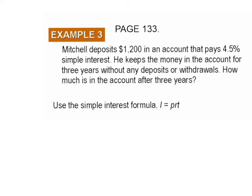Here is example three, which is on page 133. Mitchell deposits $1,200 in an account that pays 4.5% simple interest. He keeps the money in the account for three years without any deposits or withdrawals. How much is in the account after three years? We're just going to use the interest formula: I equals PRT — interest equals the principal times the rate times the time.